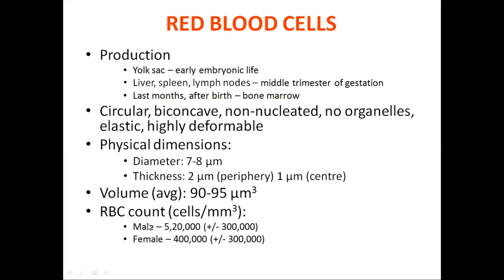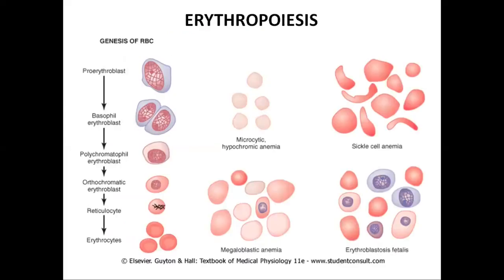The average RBC count is 5.2 million per cubic millimeter in males and 4 million per cubic millimeter in females (±0.3 million). An important question is: what is erythropoiesis? Erythropoiesis is the process of the formation and maturation of RBCs.